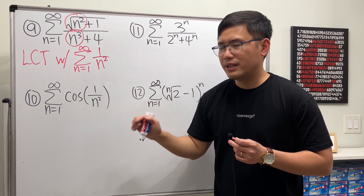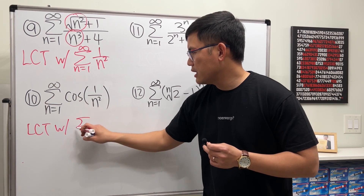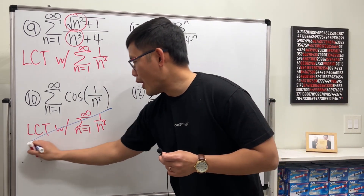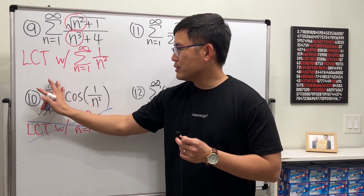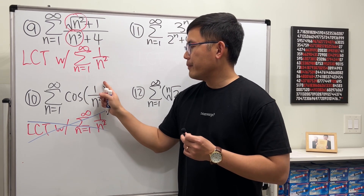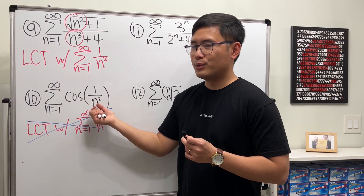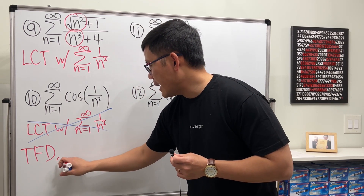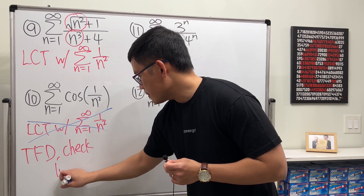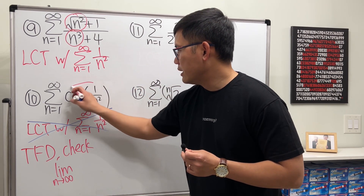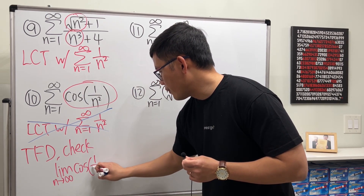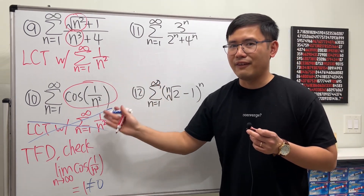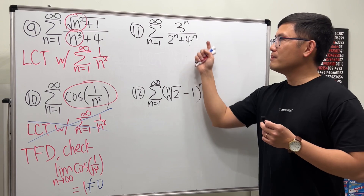Number ten: the series of cos(1/n²). You might think to use LCT with 1/n², but be careful — as n → ∞, cos(1/n²) → cos(0) = 1. So for this one, use the Test for Divergence: the limit as n → ∞ of a_n = cos(1/n²) = 1, which is not equal to 0. Therefore, this series diverges.